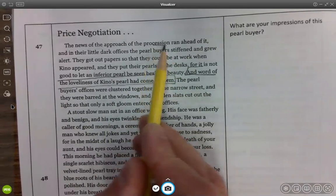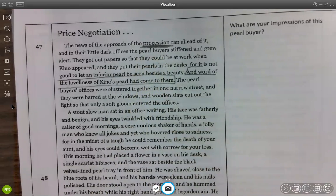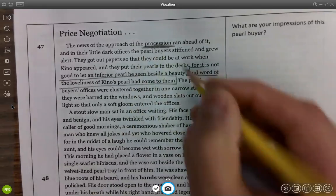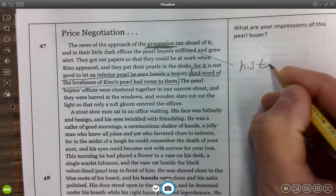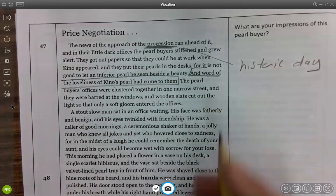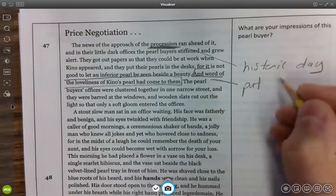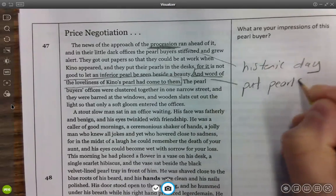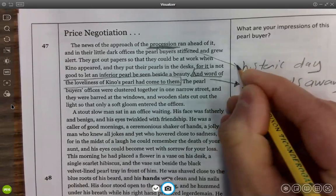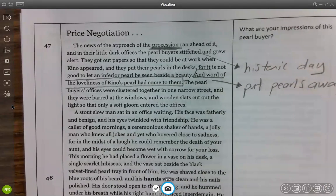The idea that there's a procession that is going along with Kino and Juana as they go to sell their pearl. I mean, people know this is an historic day. I don't have very nice handwriting. I'm just doing some summarizing here.